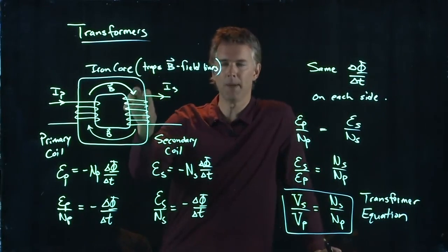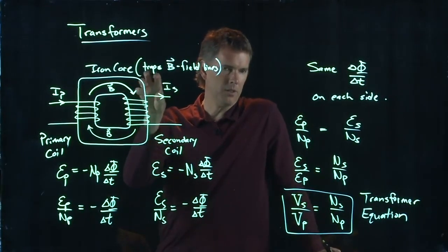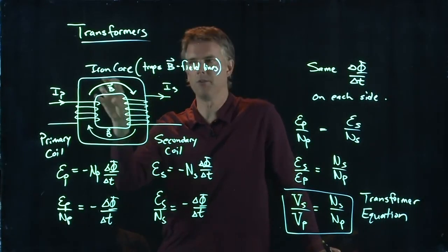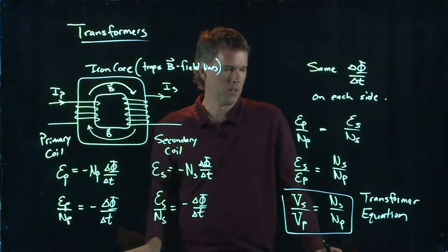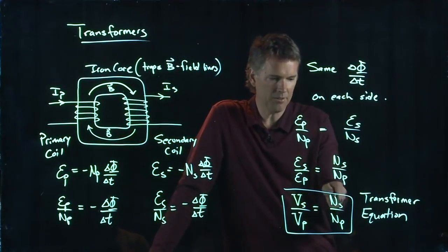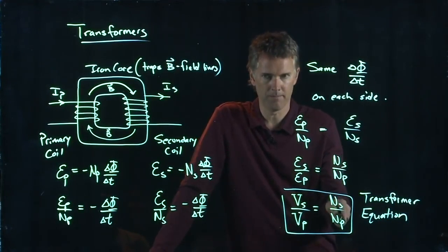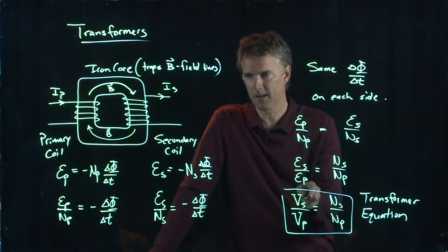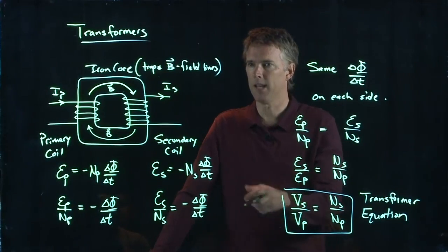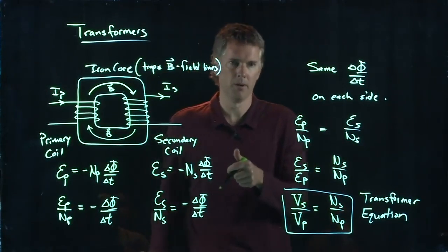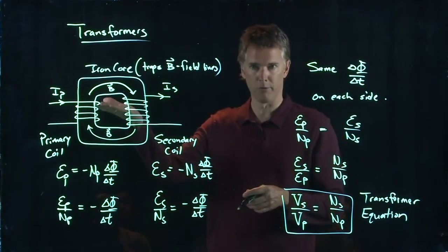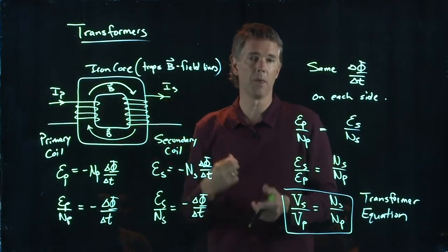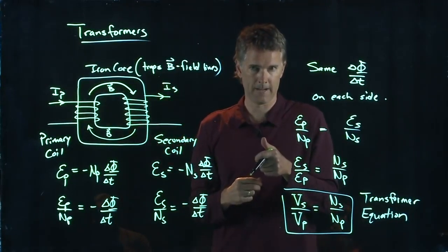But if I have twice as many loops in the secondary side compared to the primary side, then look what happens. NS is twice NP. And I get twice the voltage on the secondary side that I would get on the primary side. That's called a step-up transformer because you have stepped up the voltage. You come in with one voltage, you go out with a bigger voltage.